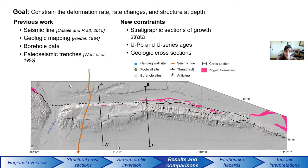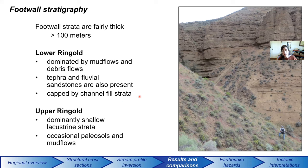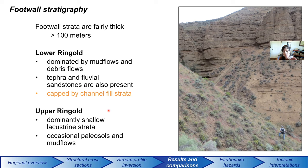We find the Ringgold formation not just on the footwall side of the Saddle Mountains anticline, but also a little bit in the hanging wall. The footwall stratigraphy is about a little over 100 meters thick, with the lower portion dominated by mud flows and debris flows, some dated tephra, and a few fluvial layers, all capped by channel-fill strata. Above the lower Ringgold formation in the footwall, we also see shallow lacustrine strata, with occasional paleosols and mud flows.